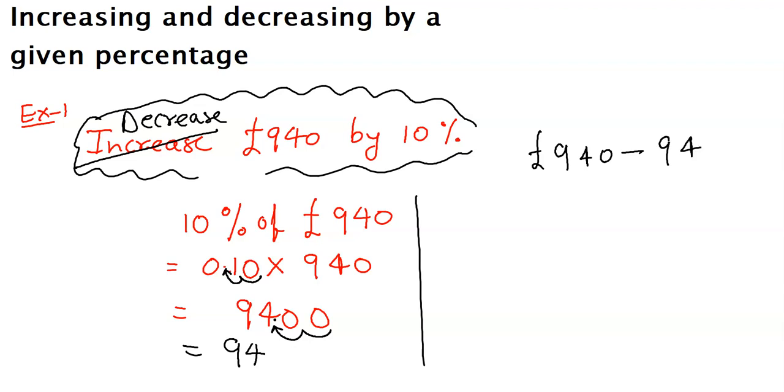If you take away 940 minus 94, how much is it coming? 856 pounds. So see, price has decreased from 940 to 856.